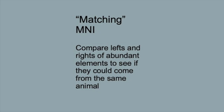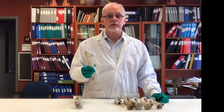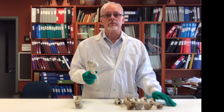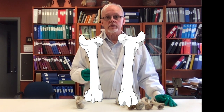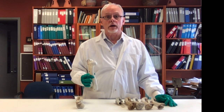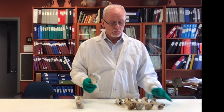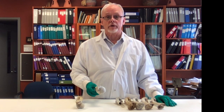Another elaboration of MNI involves comparing left and right elements to see if they could have come from the same animal. This particular right humerus doesn't match with any of the left humeri we have. It's clearly much bigger, so this means that there must have been at least one other animal, which means our MNI should be six and not five.